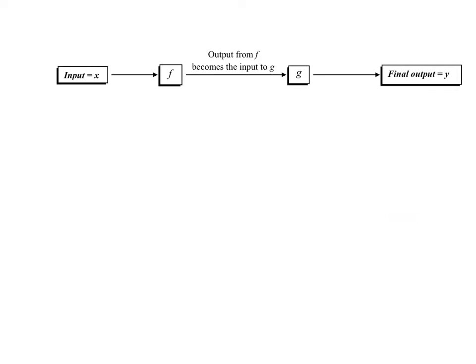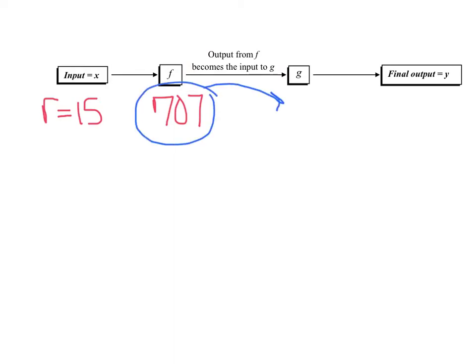Let's get this diagram in our notes and relate it to the problem we just did. We inputted our radius of 15 feet and got output F of 707 feet. The output from F becomes the input into G. We took 707, multiplied it by 1.25, and our final output was our Y value of $883.75. That's composing two functions.